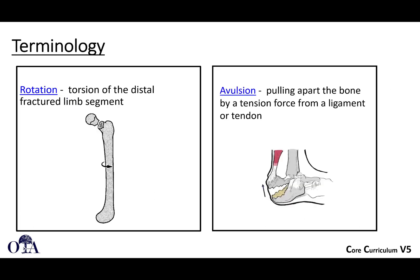Rotation is as you would expect — it's due to torsion. If you look very carefully at the image, we can see what appears to be an AP-type view of the femoral head and neck, but distally the distal femur looks more like a lateral view. So clearly there's some rotational abnormality between these two fragments.